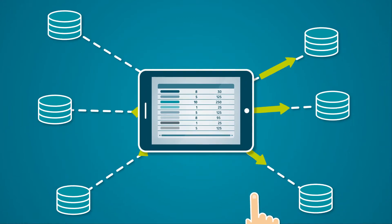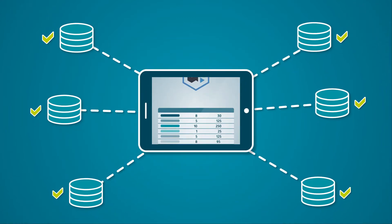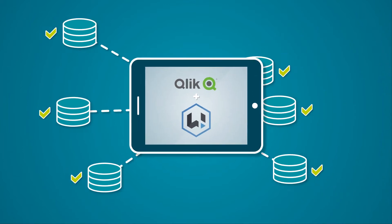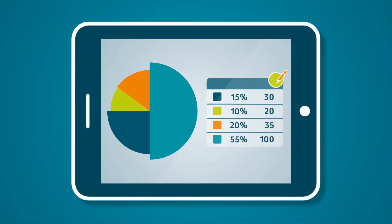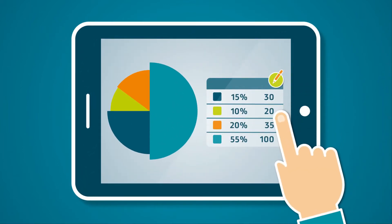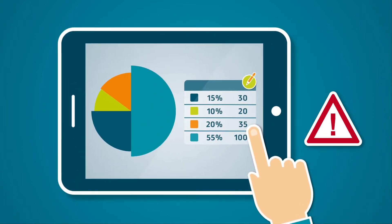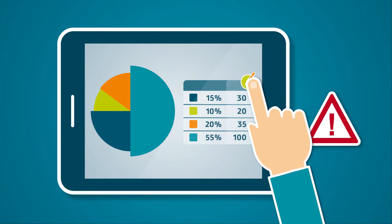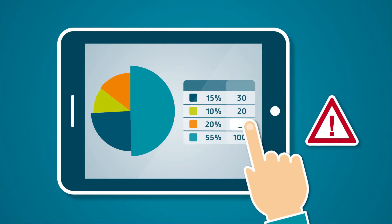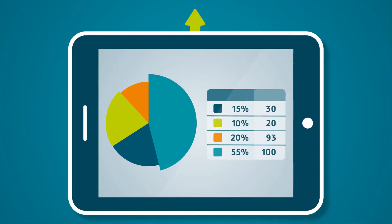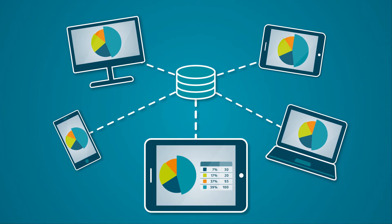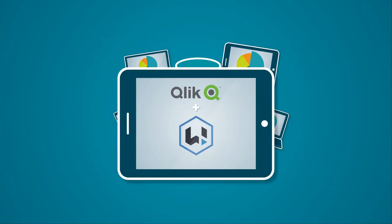And that couldn't be easier. With Right by Inform, you no longer need to change applications to make changes. The information can be entered directly into the Click interface and is then updated immediately.